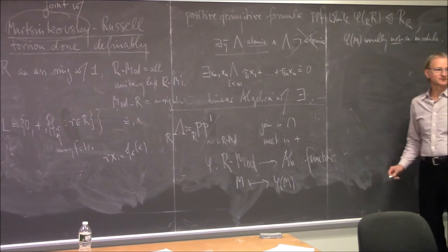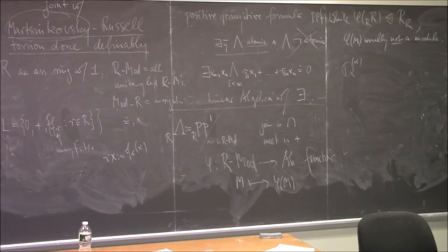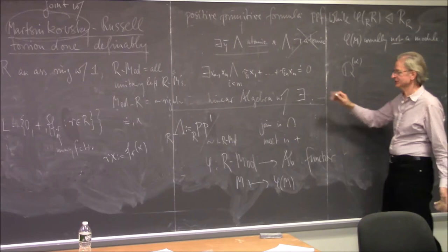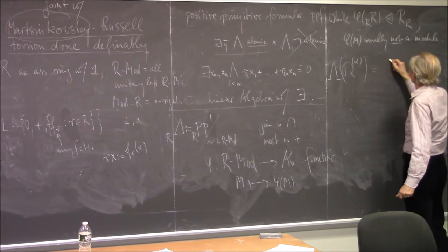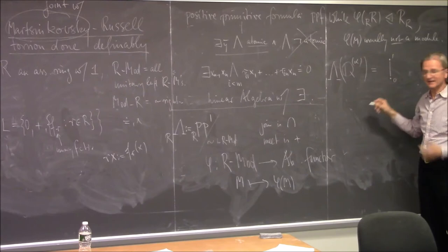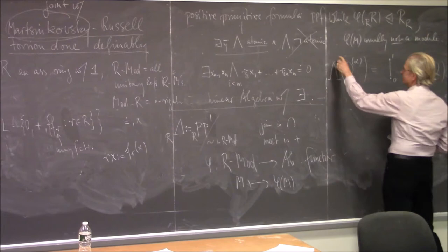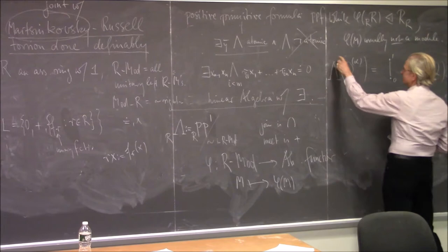Take a vector space over Q: it's just a direct sum of alpha copies of Q. The PP lattice of this — lambda of one given module — is just top and bottom: everything and zero. You can't do anything else. And the same holds as you vary alpha, so it's always the same as just the lattice of Q itself. A lot of the actual structure of the underlying module vanishes when you look at one-place formulas. With many places you get richer structure, like curves in algebraic geometry.